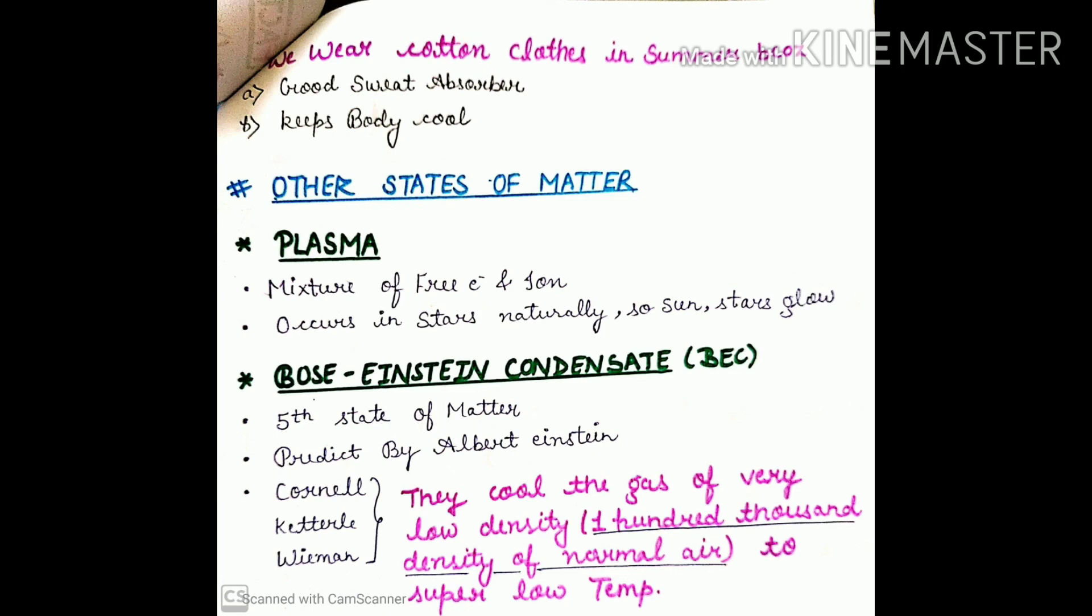Next thing is Bose-Einstein condensate or BEC. This is the last state of matter, the fifth state of matter. Predicted by Albert Einstein and three scientists Cornell, Ketterle, and Wieman, they said that when you cool any gas and decrease its density to at least one hundred thousand times less than normal air density with super low temperature, then formation of Bose-Einstein condensate happens.